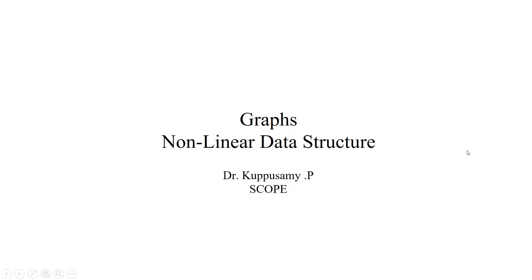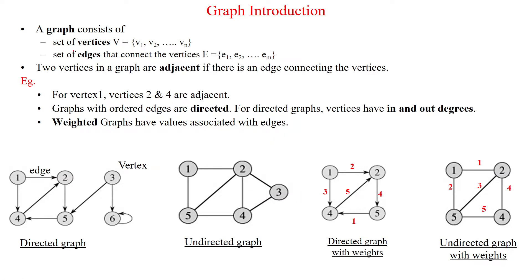Welcome to Graphs, which is a non-linear data structure. A graph consists of a set of vertices, denoted by capital V, having n number of vertices, and the vertices are maybe connected with a set of edges, denoted by capital E, having m number of edges. The two vertices in a graph are said to be adjacent if there is an edge between the two vertices.